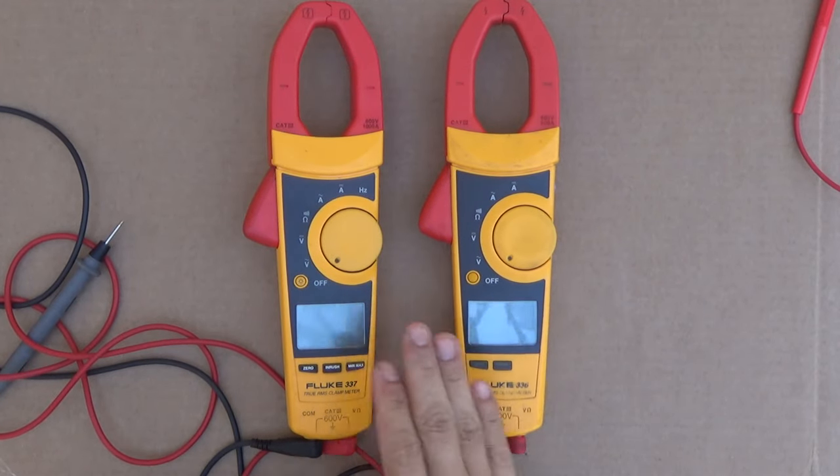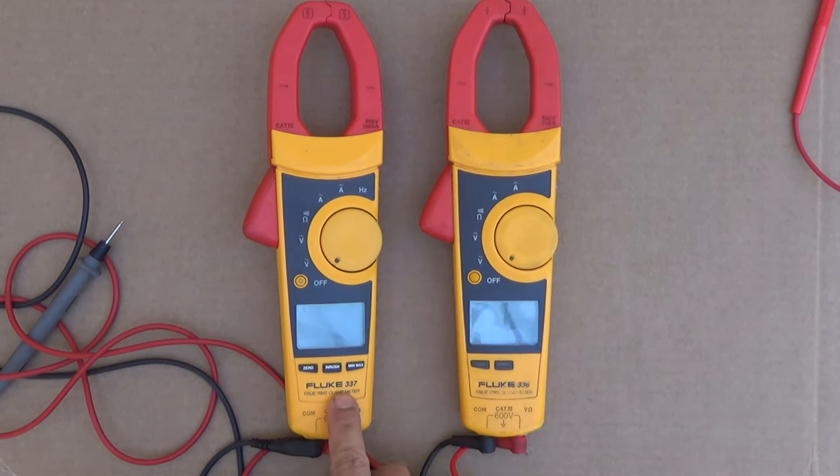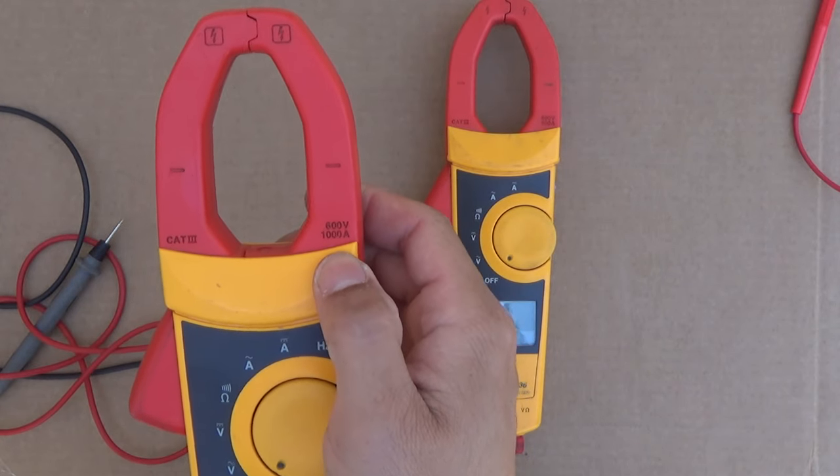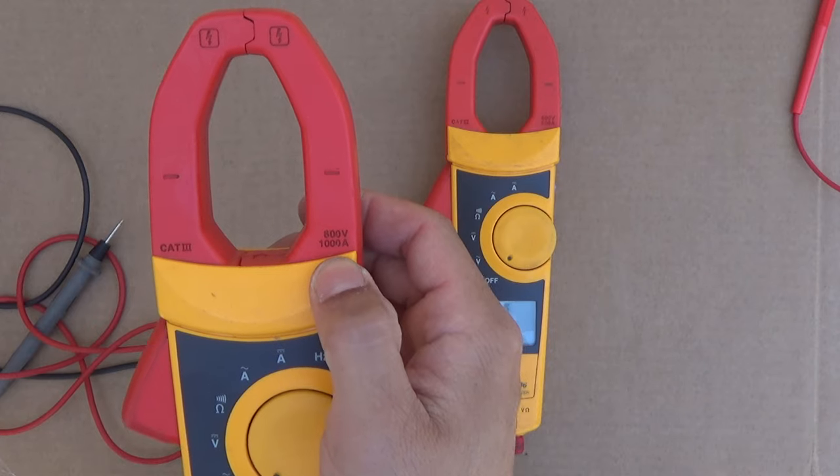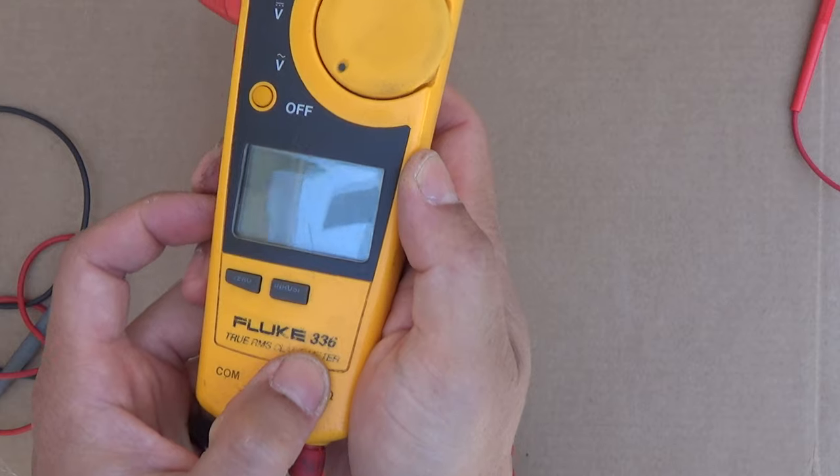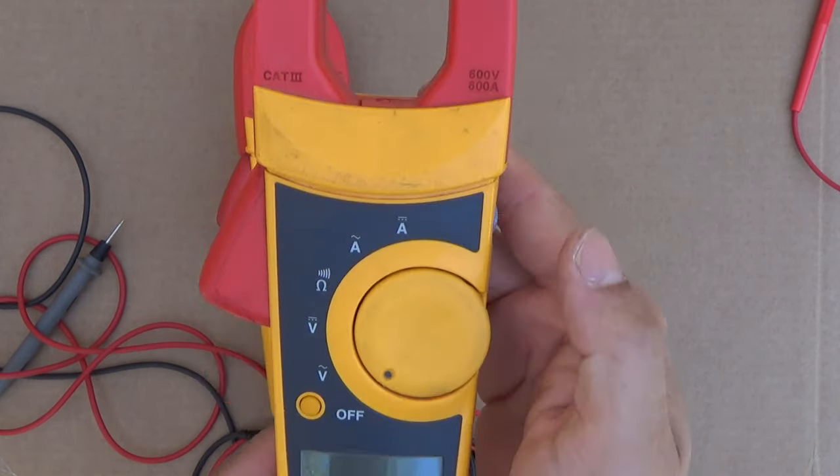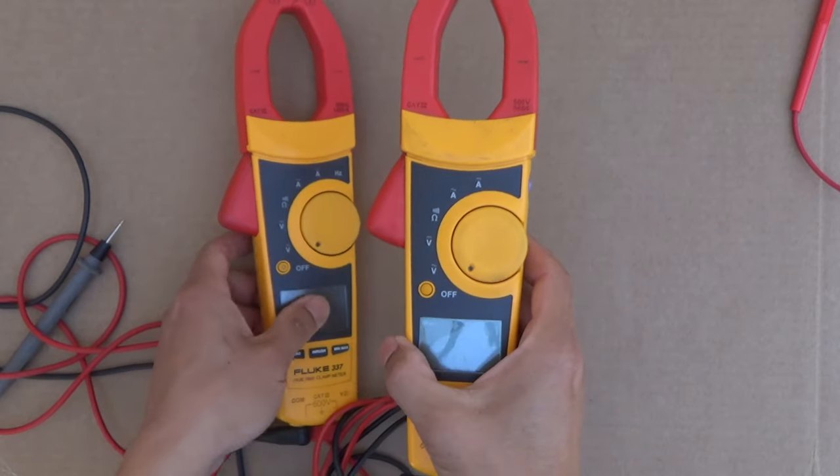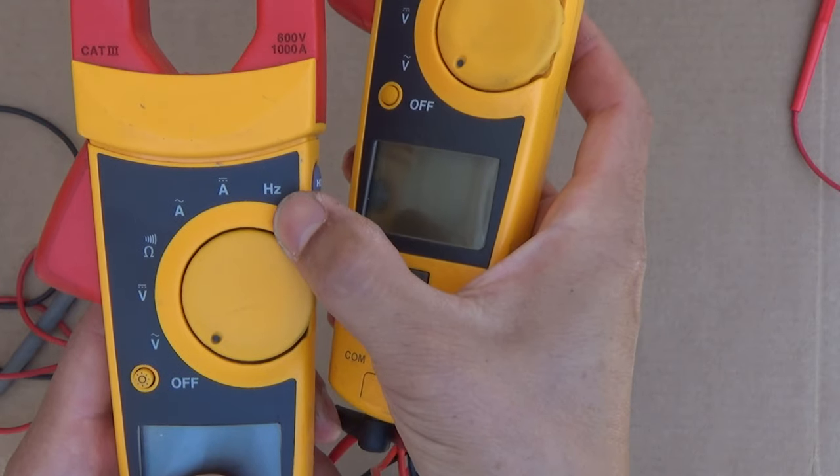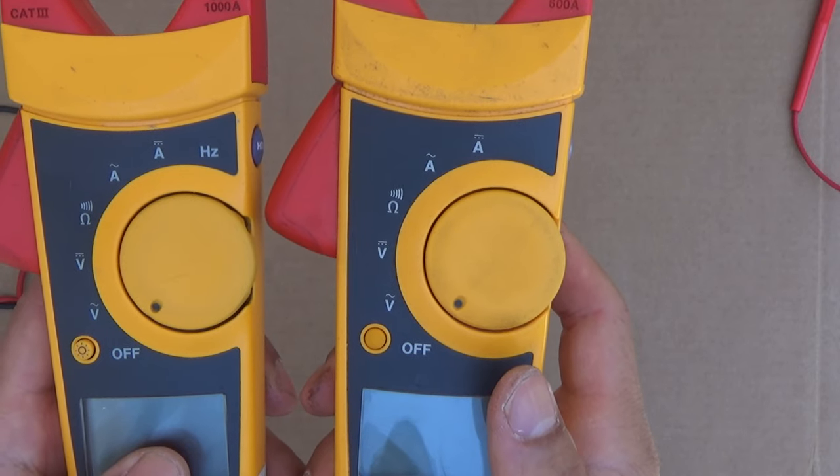These two meters are almost identical except just a few little details. The Fluke 337 can measure amperage up to 1000A for both AC and DC. The 336 model can only measure up to 600A for both AC and DC. You can see here, they are almost identical except that there is another function, the hertz function. That's it, almost exactly the same.